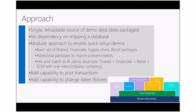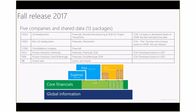In the fall release, we shipped 13 packages with five companies plus shared data. The first company is HQ US — the main company, patterned after USMF. We changed the name because USMF meant 'US Manufacturing' and not all demos are US manufacturing scenarios. With all packages loaded, you get financials, discrete manufacturing, supply chain, project, and transactions.